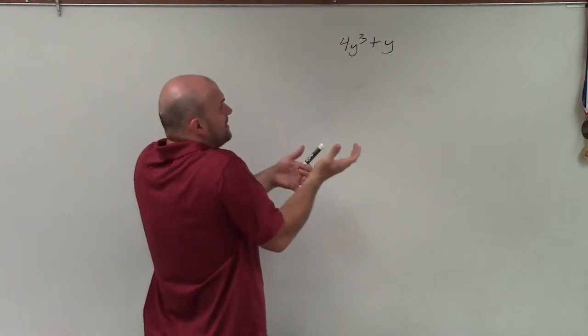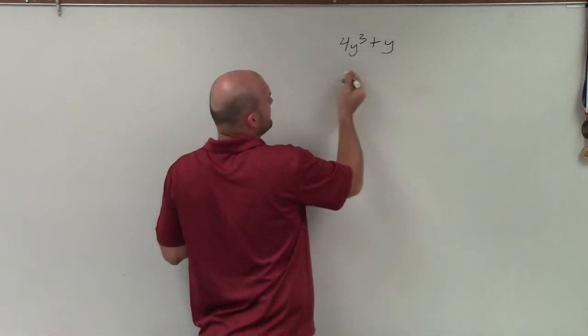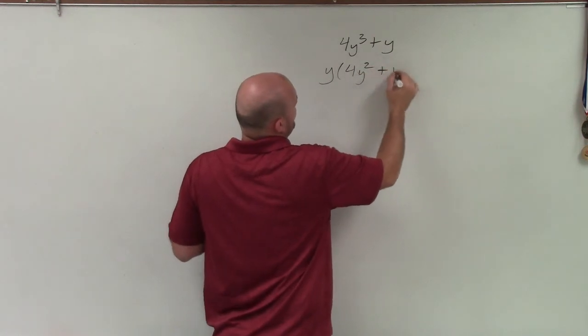So therefore, a common factor would be a y. Right? So if I factor out a y, I'm left with 4y squared plus 1.